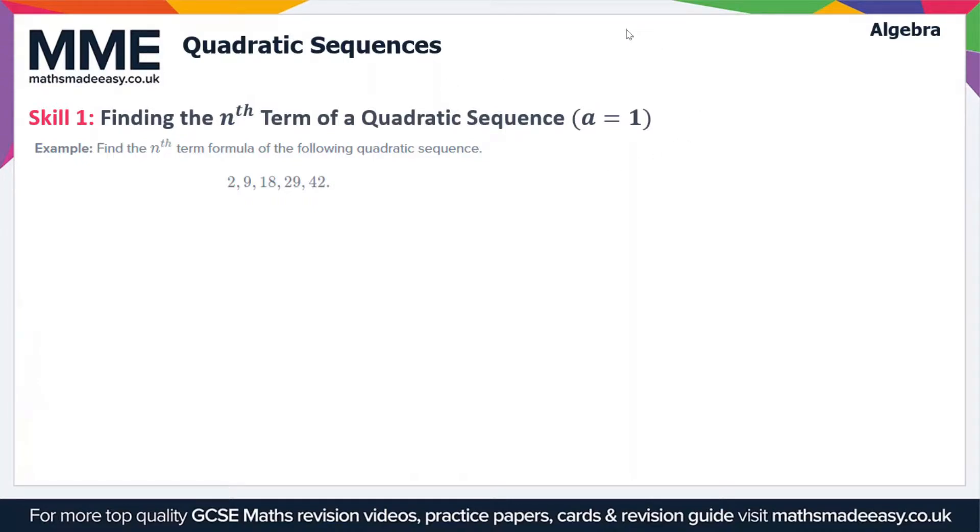When we get our quadratic sequence nth term it's going to be in the form an squared plus bn plus c. So a is our coefficient of n squared which in this case is going to be 1. Now there's quite a specific method that we need to use here so let's run through it starting with this example.